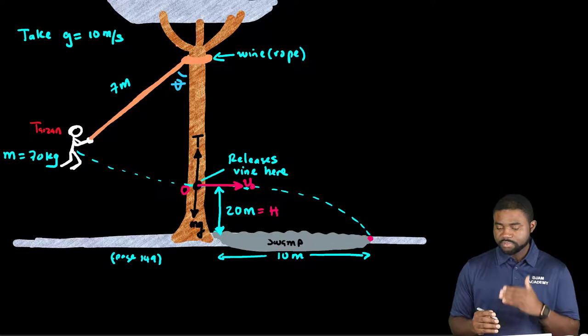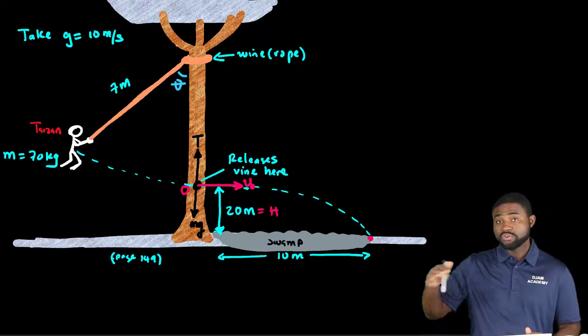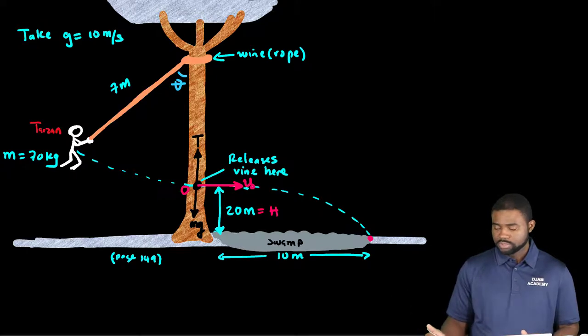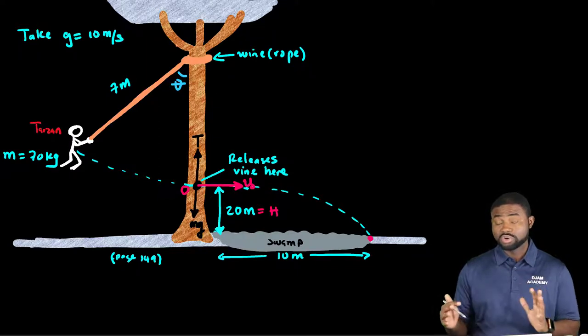When he is right below the support of the rope he lets go and flies across a swampy area. Now we are required to calculate the tension in the string just at the moment that he lets go of the rope.